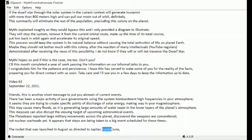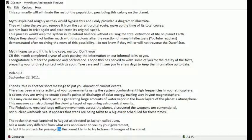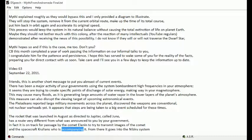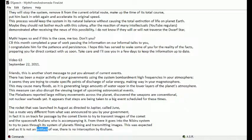The rocket that was launched in August as directed to Jupiter called Juno has a route very different from what was announced to you by your government. In fact, it is on track for passage by the comet Elenin to try to transmit images of the comet and the spacecraft Krullians who is accompanying it. From there it goes into the Nibiru system to try to pass through its system of planets, filming and transmitting images. This was expected, and as it is not an artifact of war, there is no interception by Krullians.